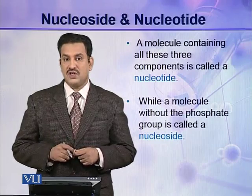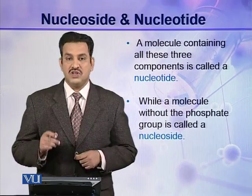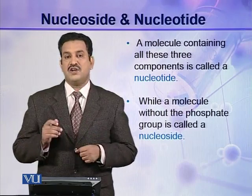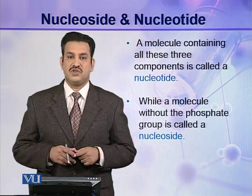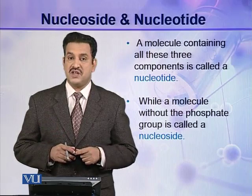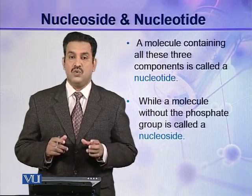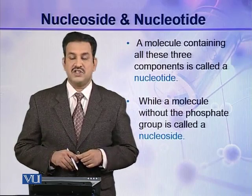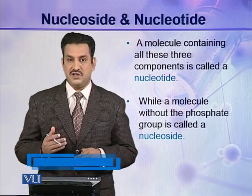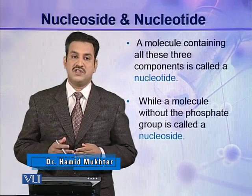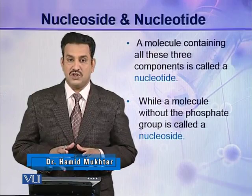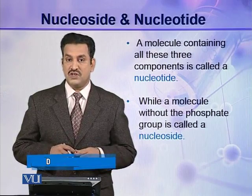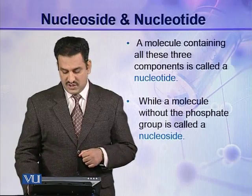A molecule containing all three components — a pentose sugar, a nitrogenous base, and a phosphoric acid — is termed as a nucleotide, while a molecule without a phosphate group is termed as a nucleoside. In other words, a nucleotide molecule with its phosphate group removed is called a nucleoside.